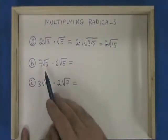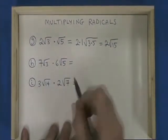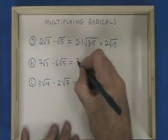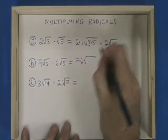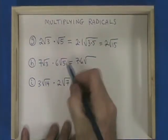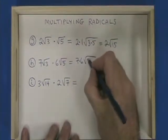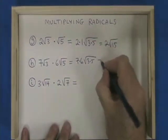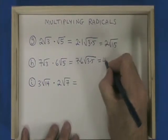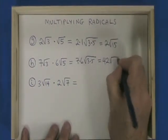Here we have 7 times 6, so we write 7 times 6. And root 3 times root 5 gives 3 times 5, which gives 42 root 15.